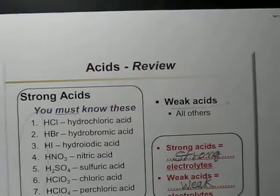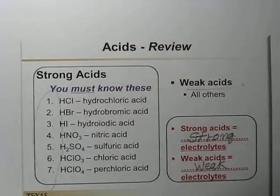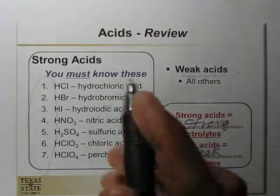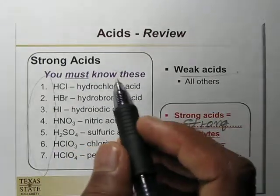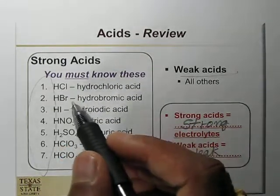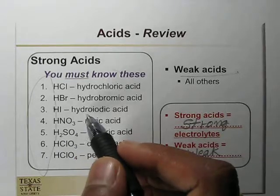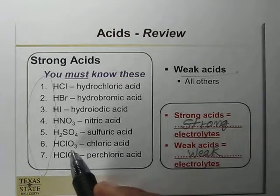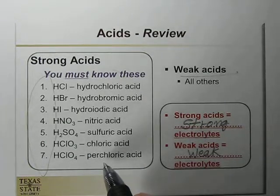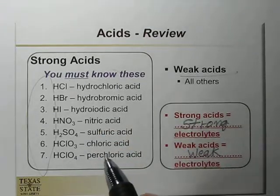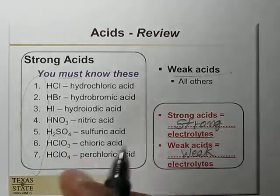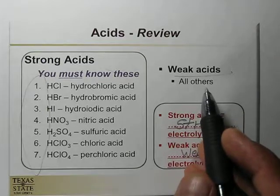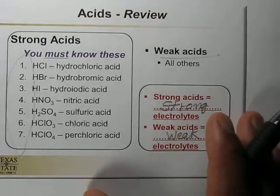There are seven known strong acids you must memorize: hydrochloric acid (HCl), hydrobromic acid (HBr), hydroiodic acid (HI), nitric acid (HNO3), sulfuric acid (H2SO4), chloric acid (HClO3), and perchloric acid (HClO4). These always behave as strong electrolytes. All remaining acids are considered weak acids and are weak electrolytes.